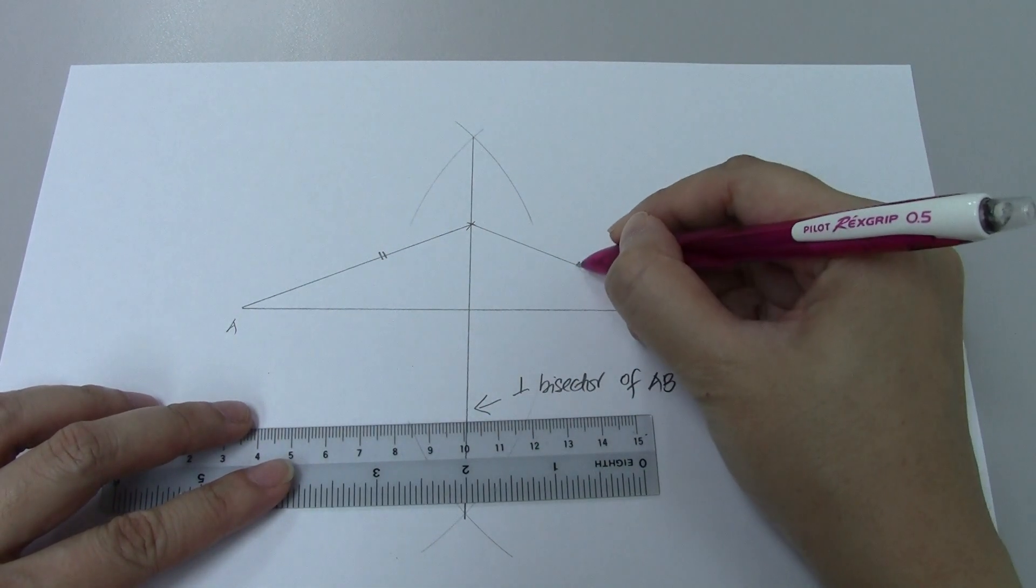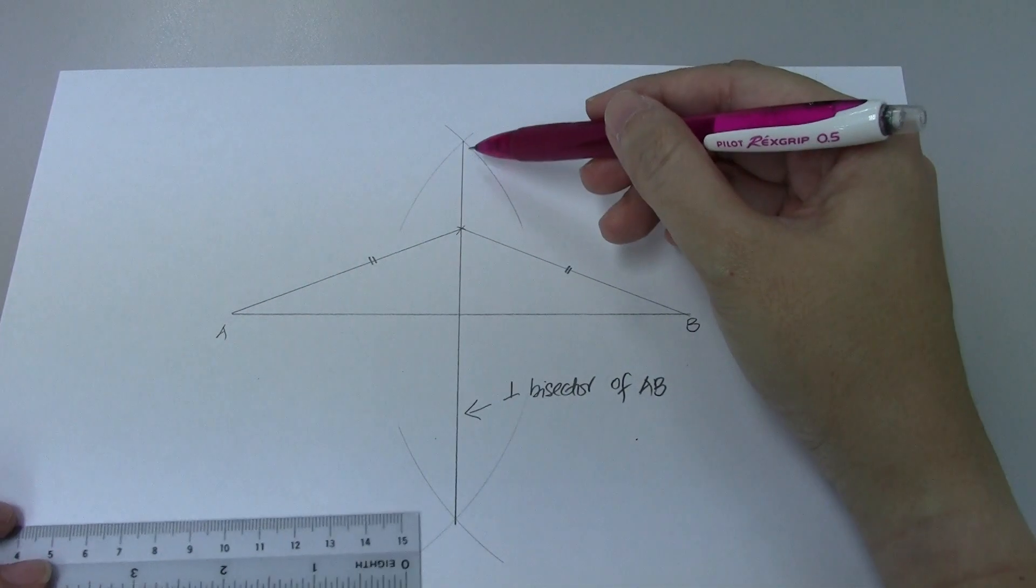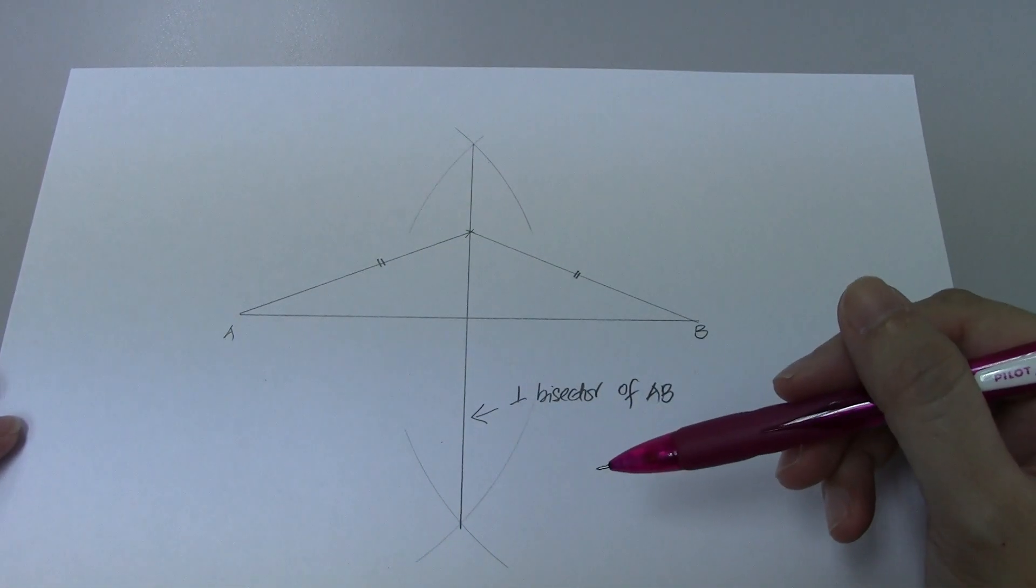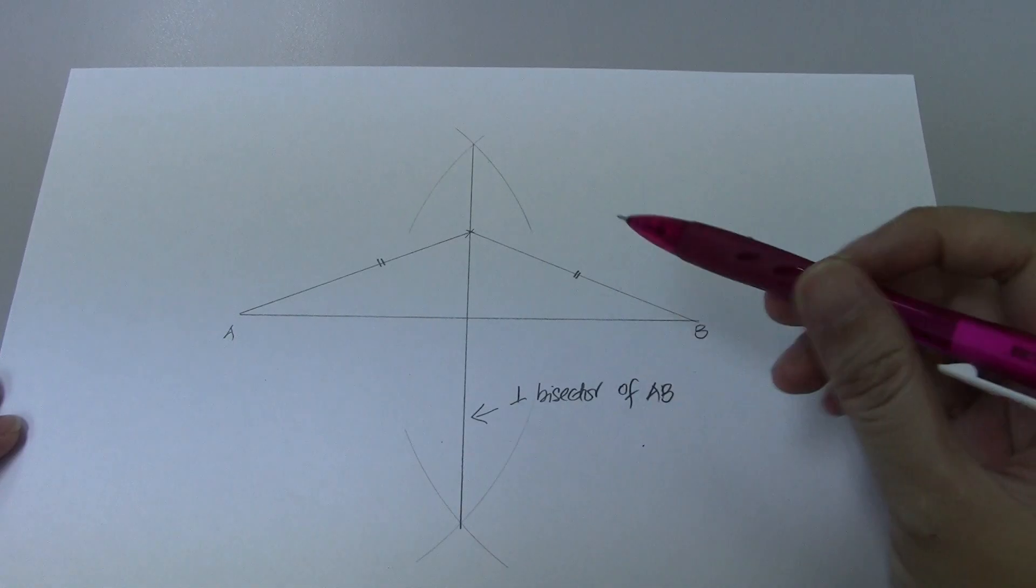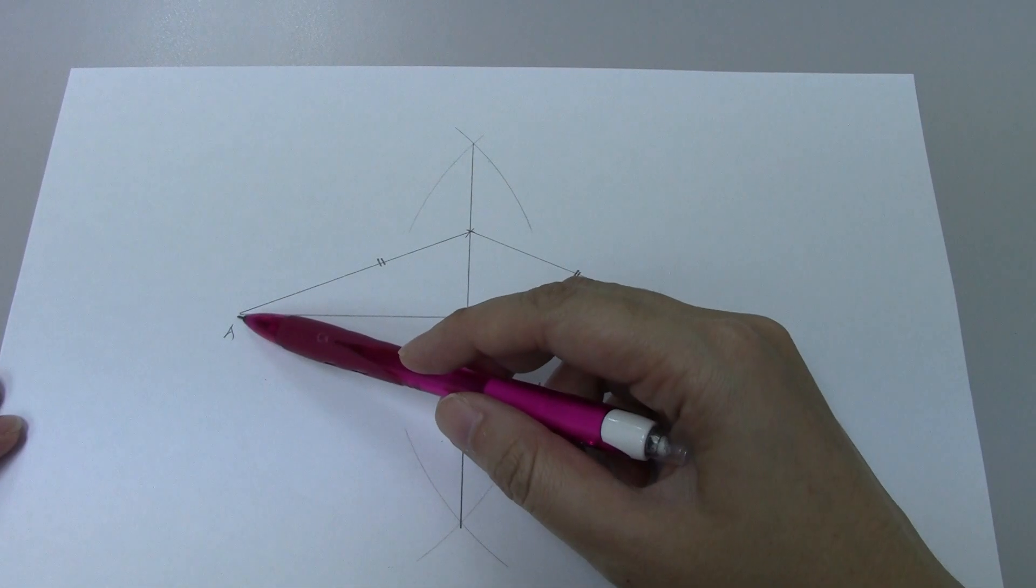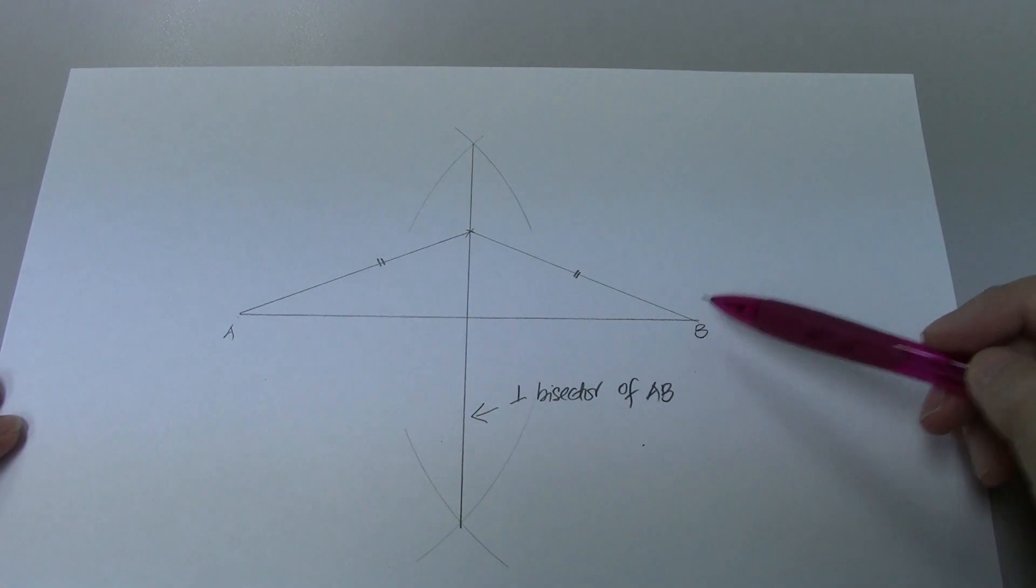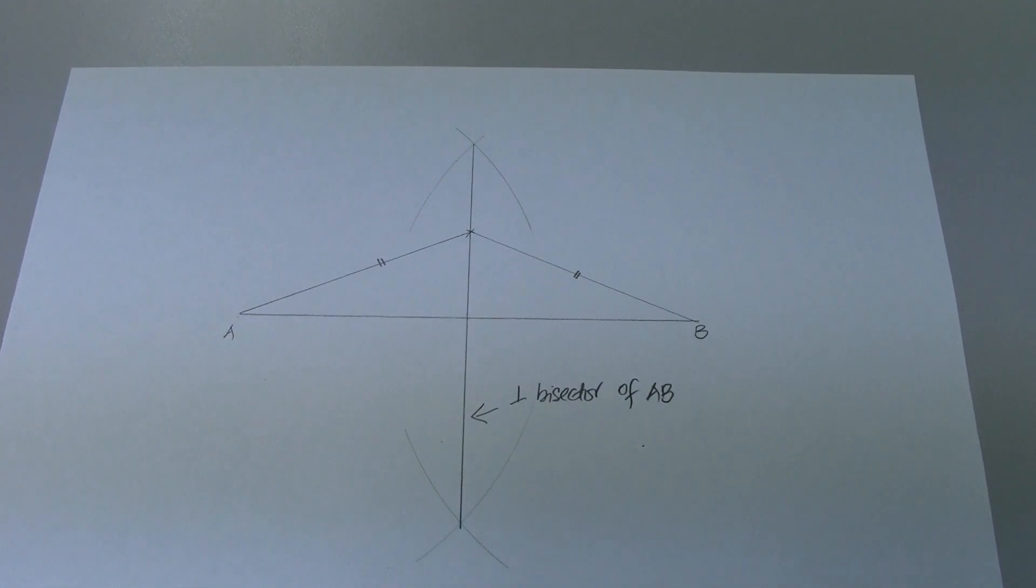In conclusion, any points on the perpendicular bisector of A, B is equidistant to point A and point B. This is how we construct our perpendicular bisector. Thank you.